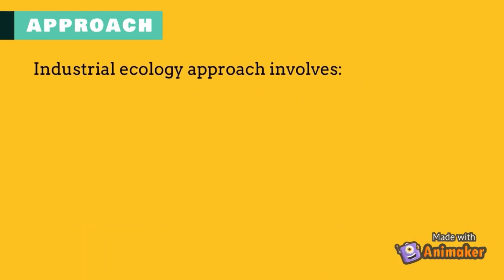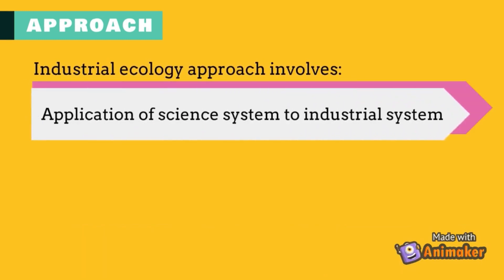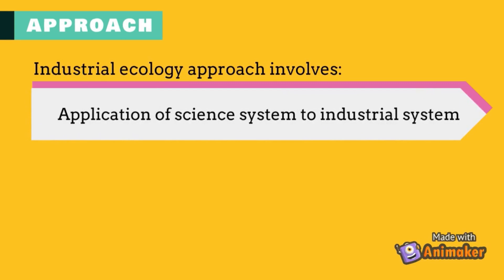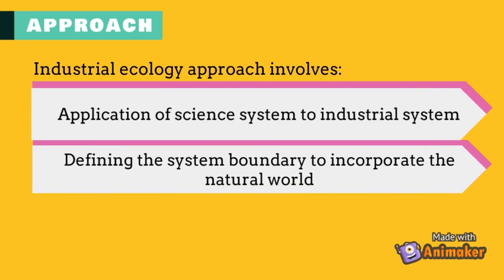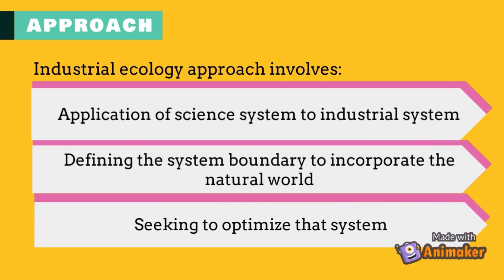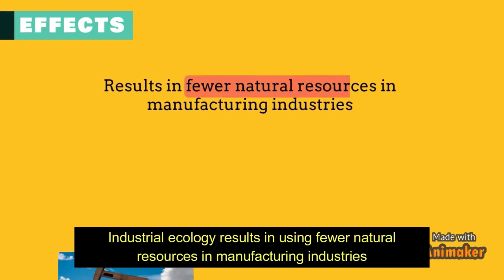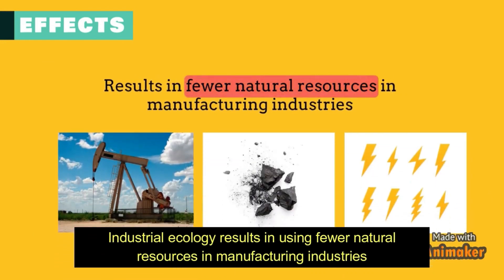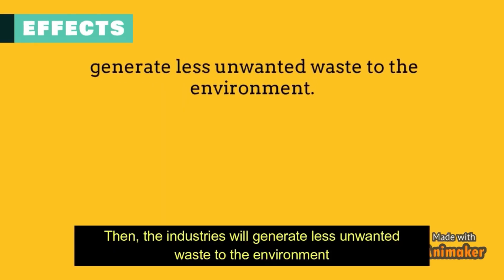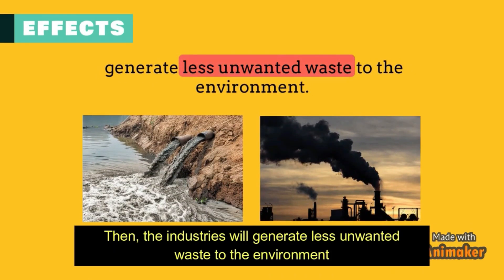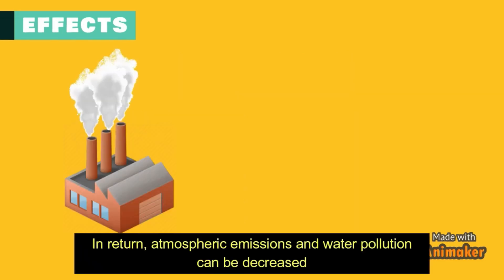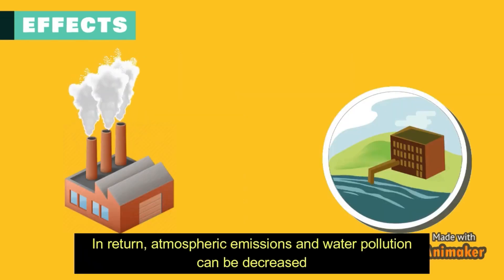Industrial ecology approach involves the application of science systems to industrial systems, defining the system boundary to incorporate the natural world, and seeking to optimize the system. Industrial ecology results in using fewer natural resources in manufacturing industries. Then, the industries will generate less unwanted waste to the environment. In return, atmospheric emissions and water pollution can be decreased.